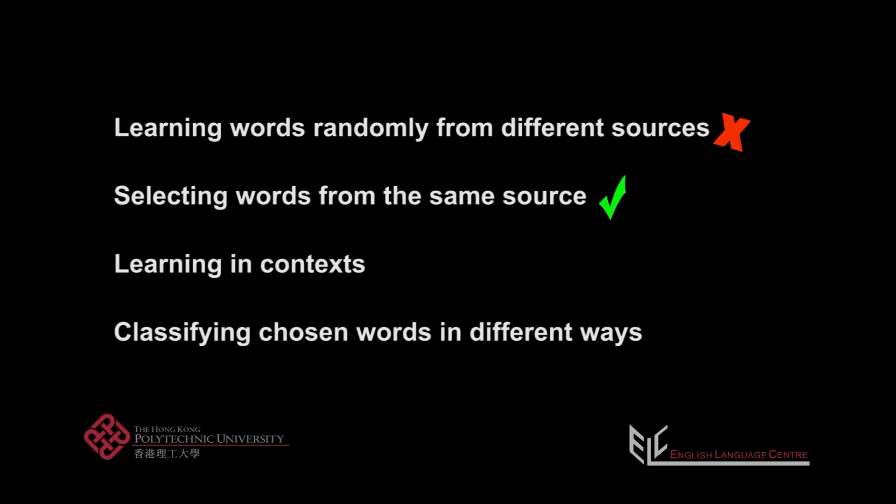I just picked the ones that I don't know. I suggest you choose words that you want to learn from one source. That way, you can learn them in context. When you're reading, there are some words that you can guess from the context, but there are other words that you really need to write down in groups so that you can memorize them.